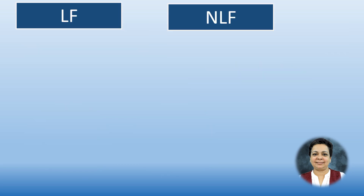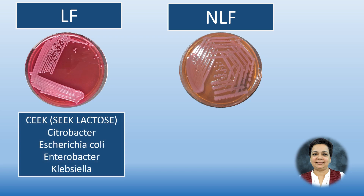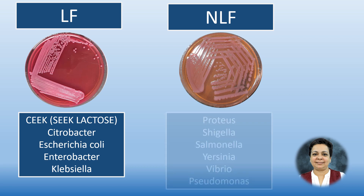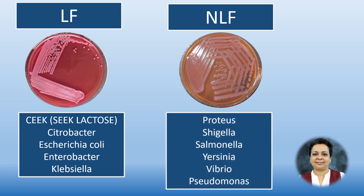Important lactose-fermenting bacteria can be remembered by the mnemonic CEEK: Citrobacter, Escherichia coli, Enterobacter, and Klebsiella — they 'seek' lactose. The non-lactose fermenters include Proteus, Shigella, Salmonella, and Yersinia among the Enterobacteriaceae, and also Vibrio and Pseudomonas.